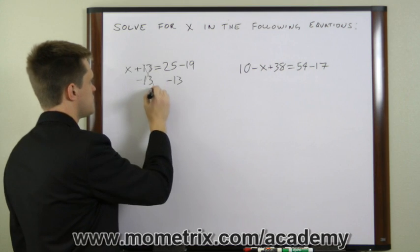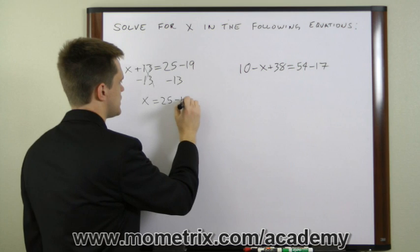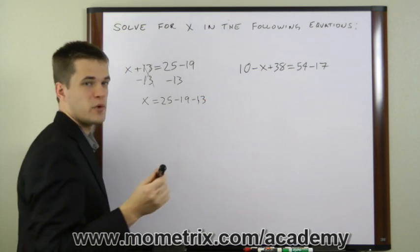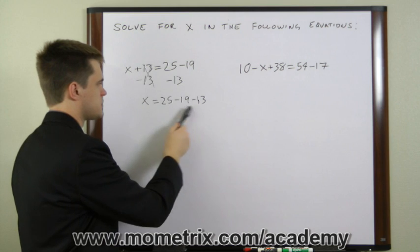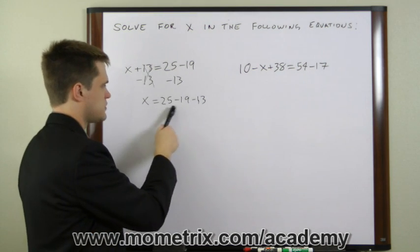This will cancel, and what we're left with is x equals 25 minus 19 minus 13. Now all we have to do is solve this part over here, and we've got the value of x. So let's do these one at a time.